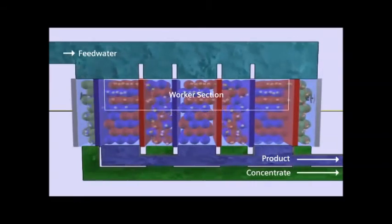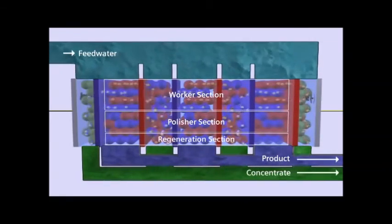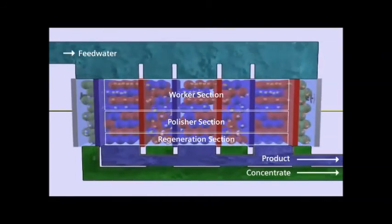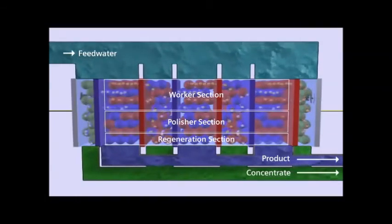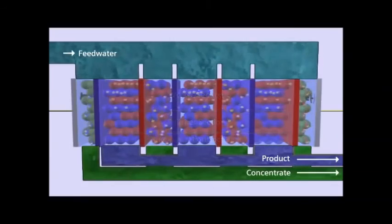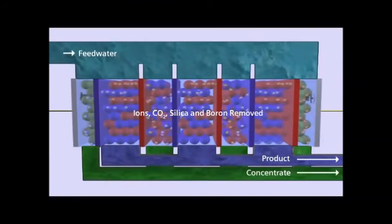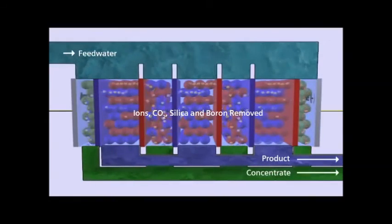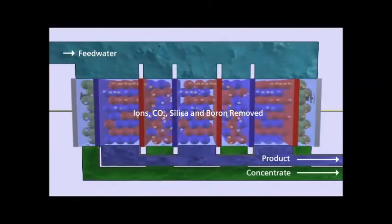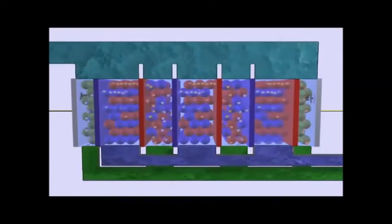You essentially have a worker and polisher combined into one unit which constantly regenerates. IonPure CEDI systems are more effective than other electrodeionization systems when it comes to removing dissolved materials such as salts, acids and bases, as well as weakly ionized materials such as dissolved organics, silica, boron and carbon dioxide. This continuous regeneration process also eliminates pH shock and greatly extends the life of the resins.